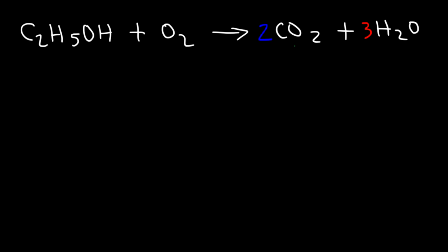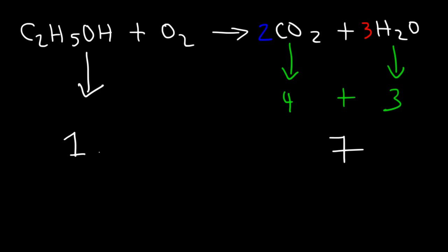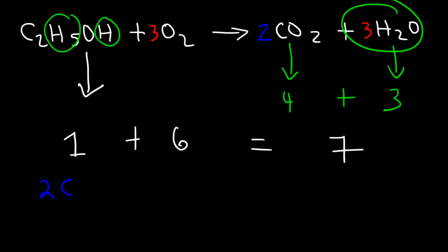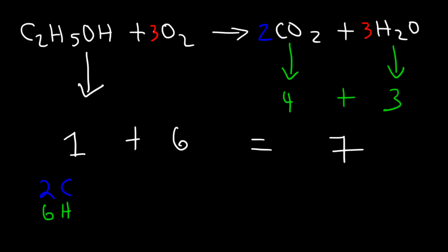Now let's count the oxygen atoms on the right: 2 times 2 is 4 in the two CO₂ molecules, and 3 in the three water molecules — 4 plus 3 is 7. We already have one oxygen atom in ethanol, so we need 6 more, since 1 plus 6 is 7. Six divided by 2 is 3, so we put a 3 in front of O₂. Checking: 2 carbons on both sides, 6 hydrogens on both sides (5 plus 1), and 7 oxygens on both sides (4 plus 3 on the right; 3 times 2 plus 1 on the left). Everything is balanced.